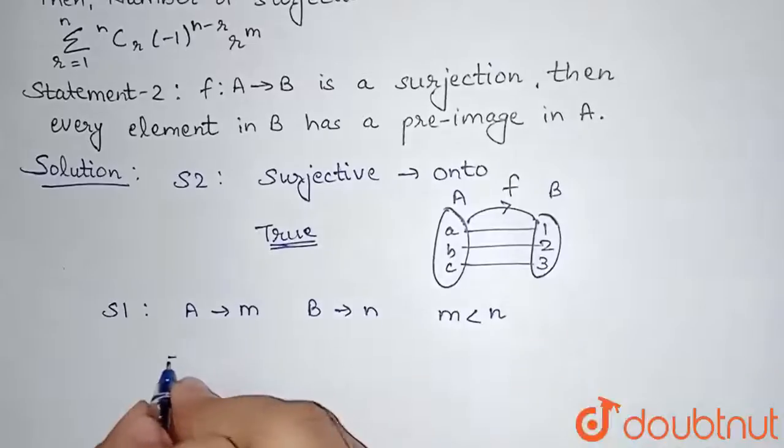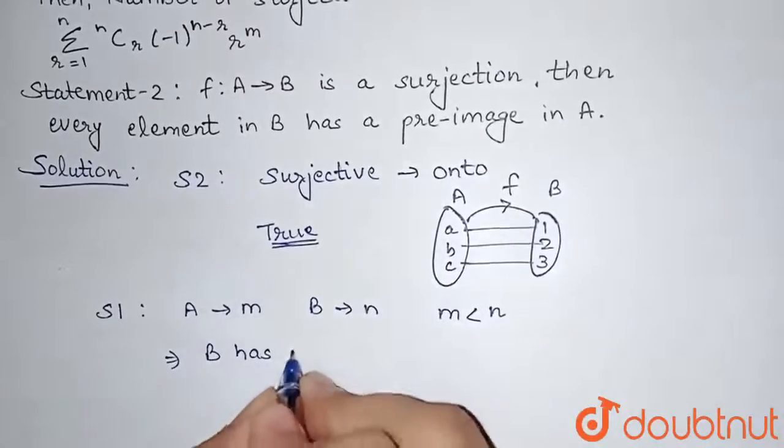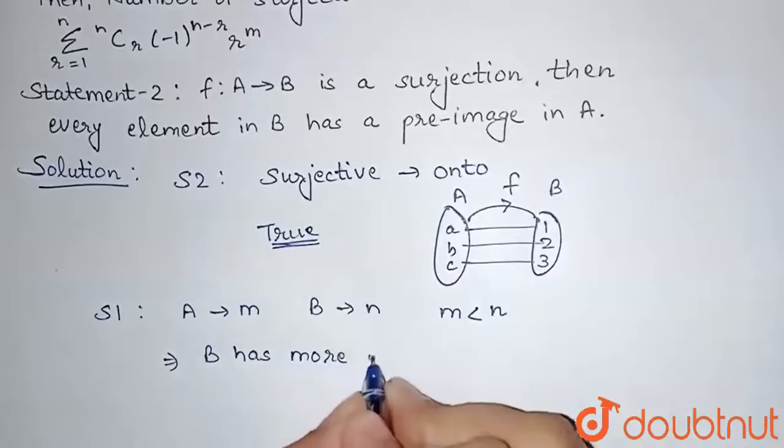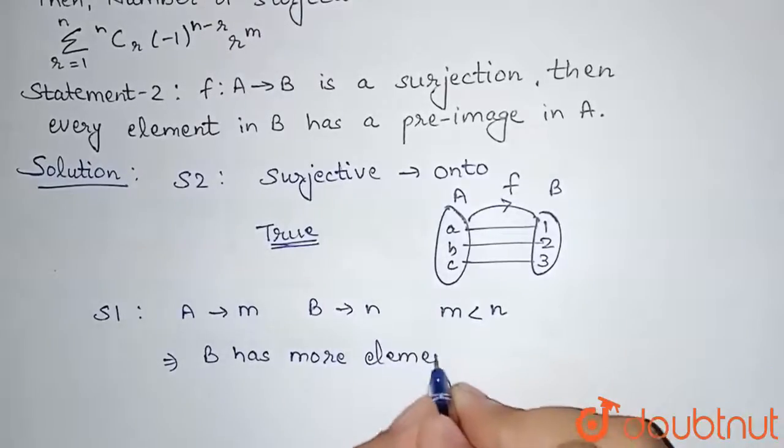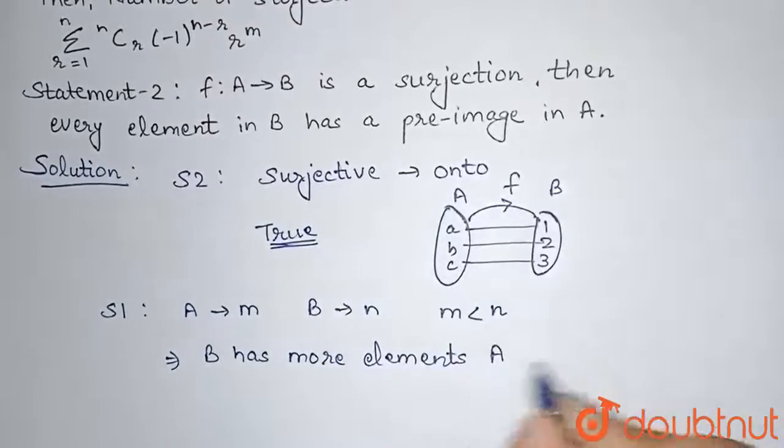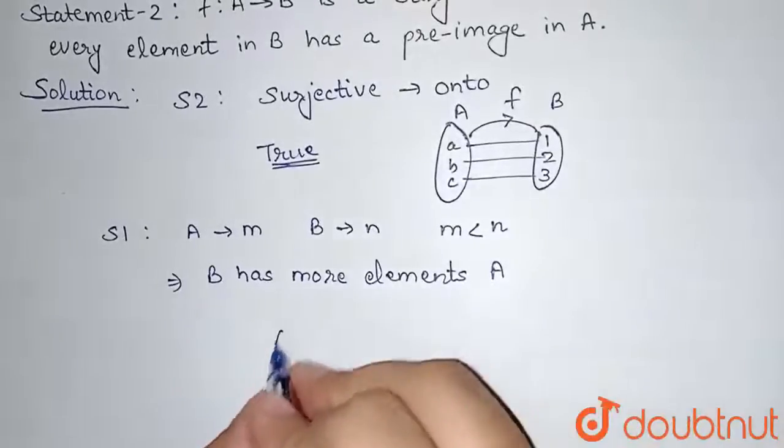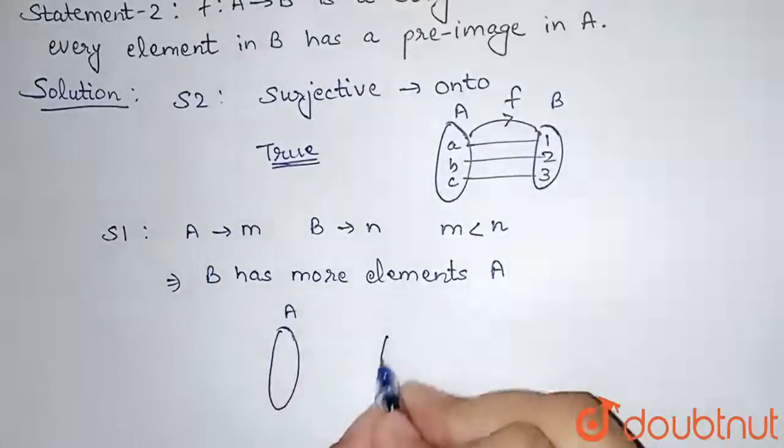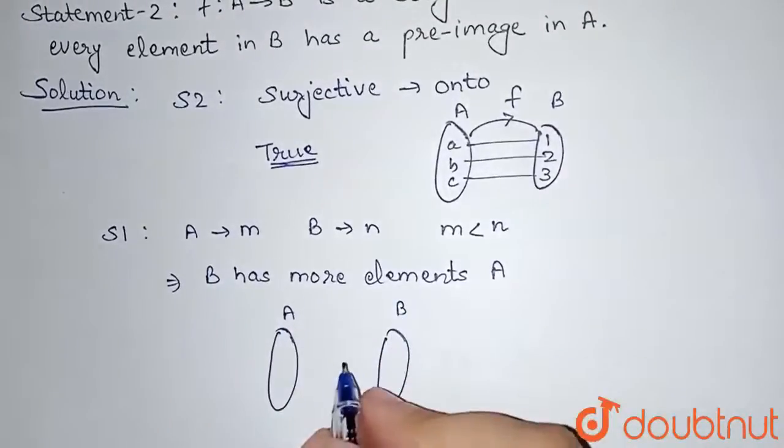So what we can conclude from here that the B set given to us has more elements than A. So our B set has more elements. So we will be taking an example here. Let's say this is A and this is B here.